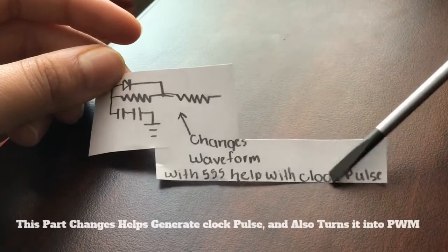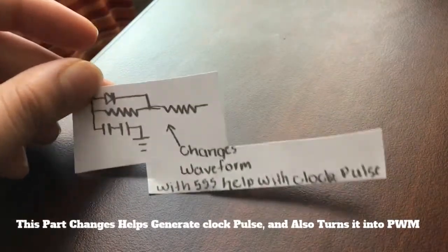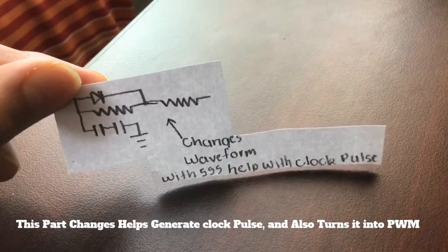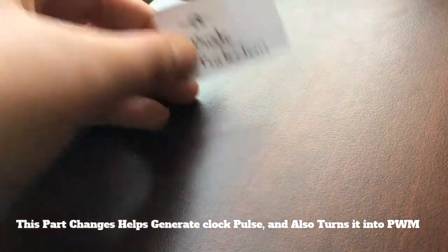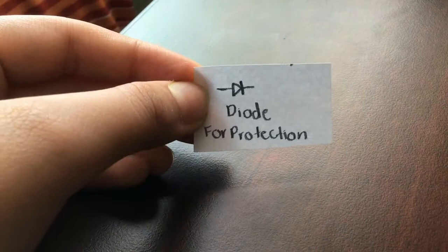This part right here where the two capacitors are changes the waveform because it turns it into a square wave or PWM. The 555 timer is generating a clock pulse.